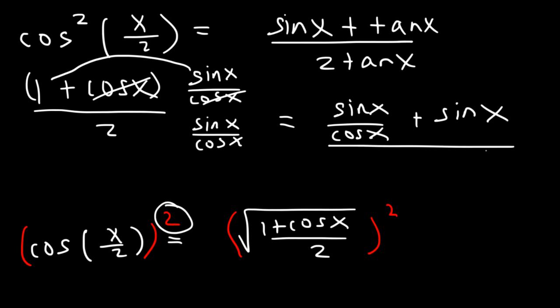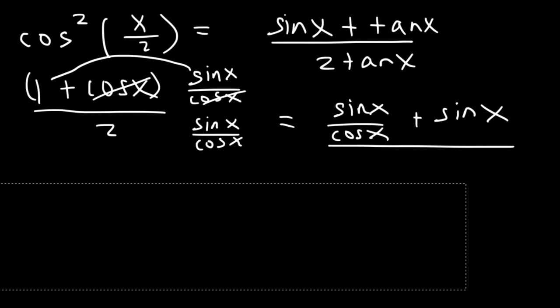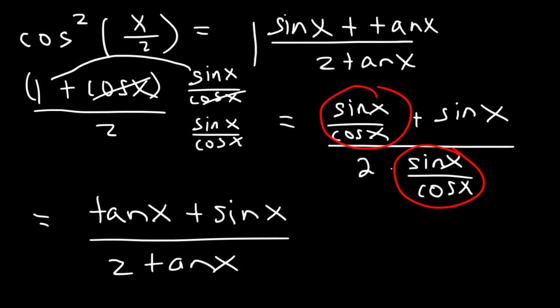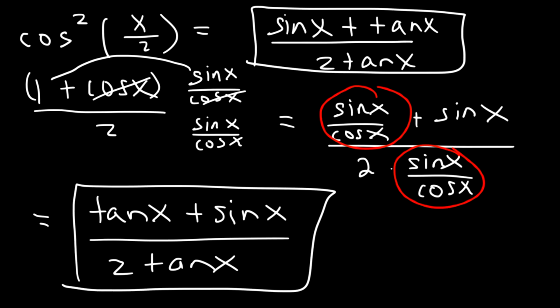And on the bottom, we're just going to have 2 times sine over cosine. Now sine over cosine can be replaced with tangent. So we have tan x plus sine x divided by 2 tangent x. So now we have just verified the identity. And that's all you need to do for this problem.